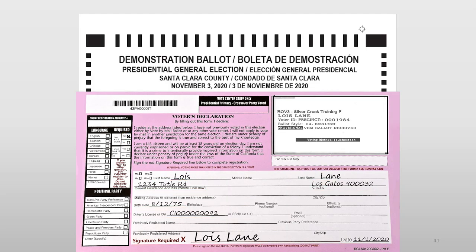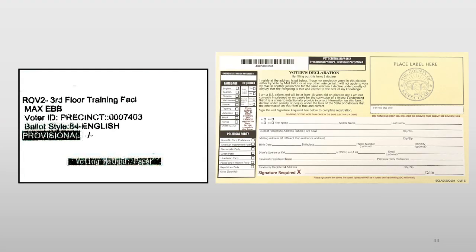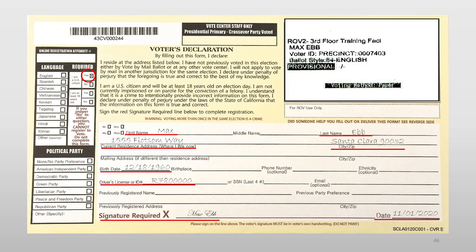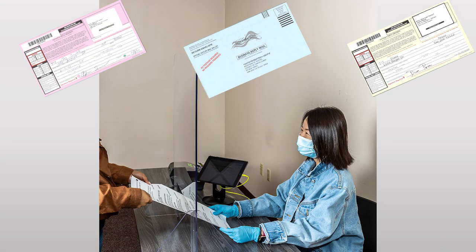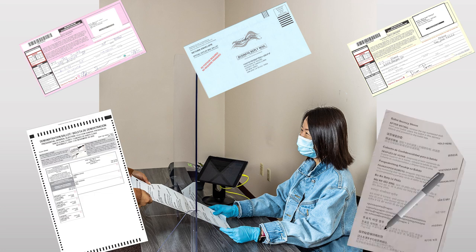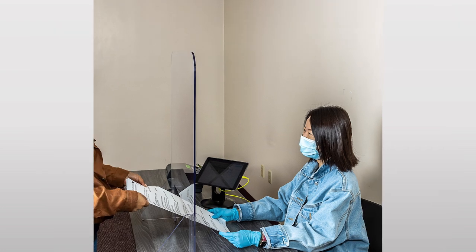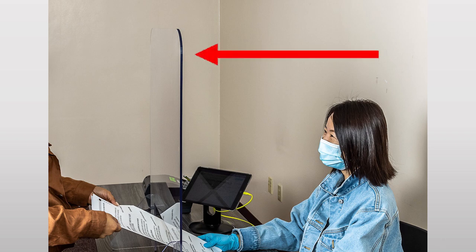Voters need to complete their provisional ballots at the vote center. If you get a provisional that doesn't have a reason next to it, they are a voter with a yellow conditional envelope. Adhere the print label to the envelope. Conditional voters need to vote at the vote center. When you are exchanging envelopes, ballots, and secrecy sleeves, make sure that there is a sneeze guard barrier between you and the voter.